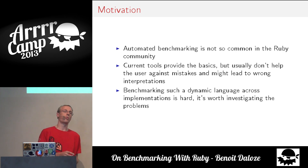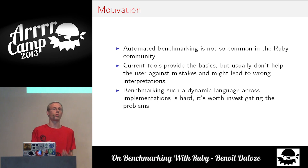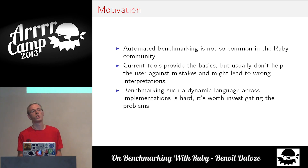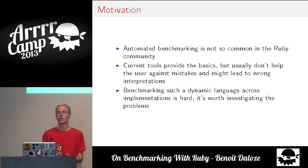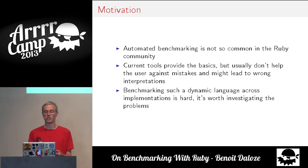Current tools provide the basics — you can benchmark a block of code and know how much time it takes — but it's not reliable or stable. You benchmark it once and it takes one second, the second time it takes two seconds. You'd like it to be reliable so you can reproduce it. And finally, Ruby is a very dynamic language, so it's much harder to benchmark than C — it's not at all deterministic.